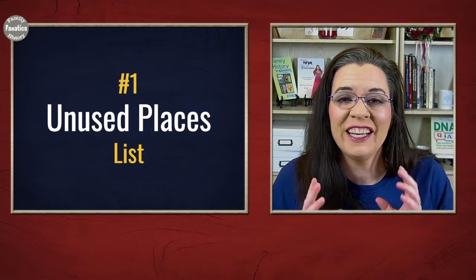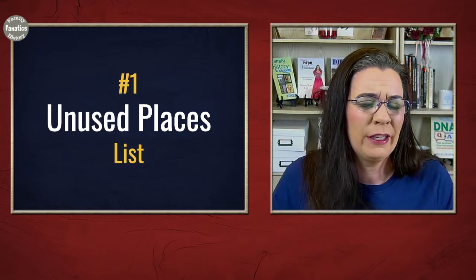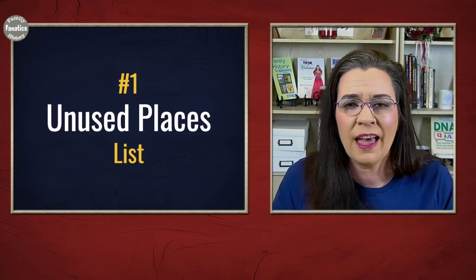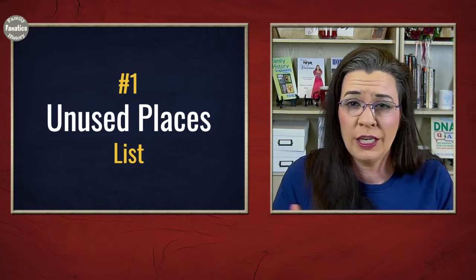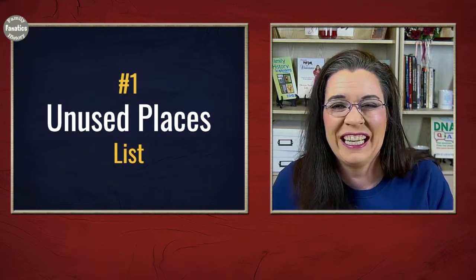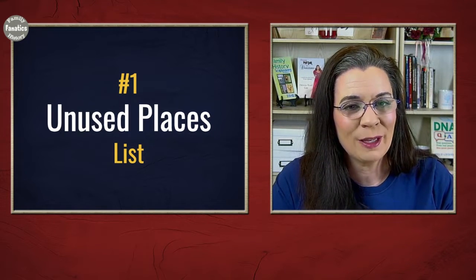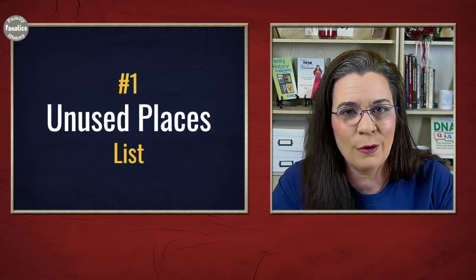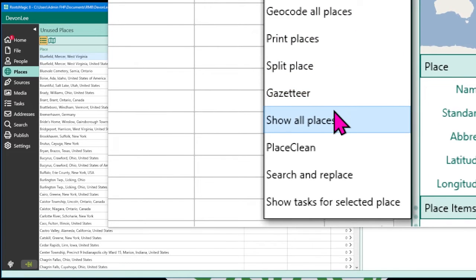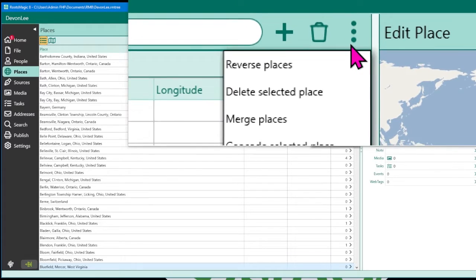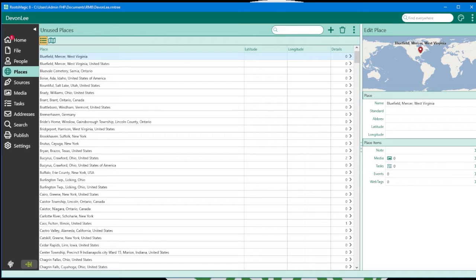The first tool I like to use is the unused place list. This shows me names that I might have brought in from other programs or merging trees, where I have improved the names or stopped using that place. Click on the three dots and when you scroll down, if you see 'show all place names,' that's all the names in your database. Click on it again and click 'show unused places' and you will only have a list of the unused places in your database.